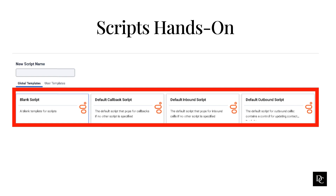Choose a template. Blank script is a blank script without any customizations. The default callback script is the default script that pops for callbacks — use this script if you did not specify another script in Architect to run in response to an in-queue callback action. The default inbound script is the default script that pops for inbound calls. The default outbound script is a default script for outbound dialing — this script contains a control for updating contact list fields, and you must select a contact list in the script's properties, otherwise Scripter shows no edit fields. In this hands-on, we are going to select the default inbound script and click Create.